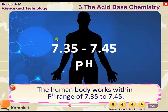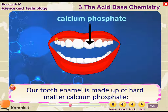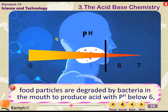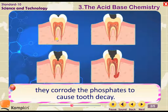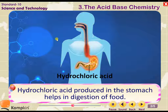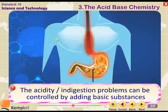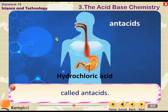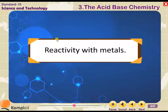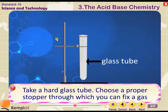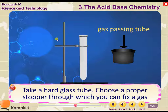The human body works within a pH range of 7.35 to 7.45. Our tooth enamel is made up of calcium phosphate. Food particles are degraded by bacteria in the mouth to produce acid with pH below 6, which corrodes the phosphates causing tooth decay. Hydrochloric acid produced in the stomach helps in digestion of food, and indigestion can be controlled by adding basic substances called antacids.